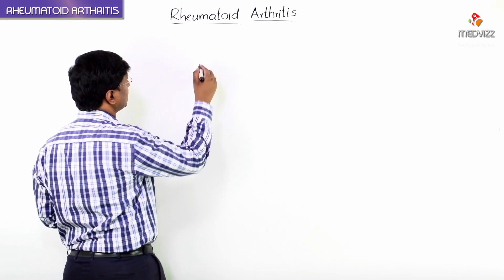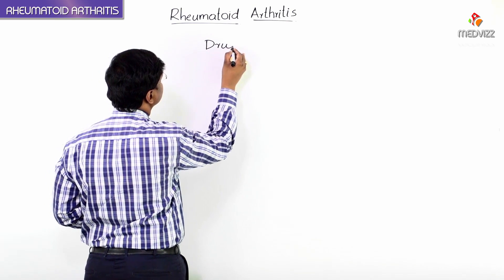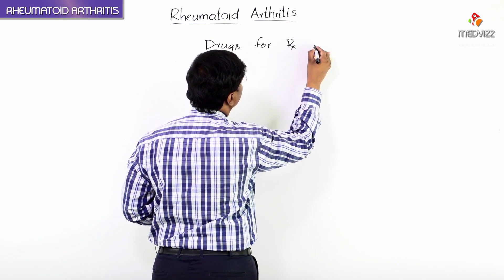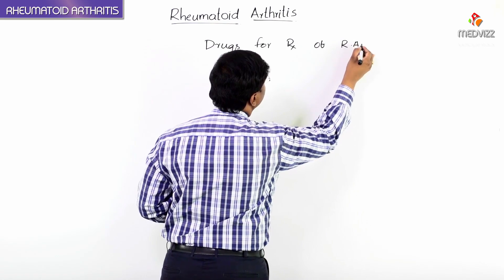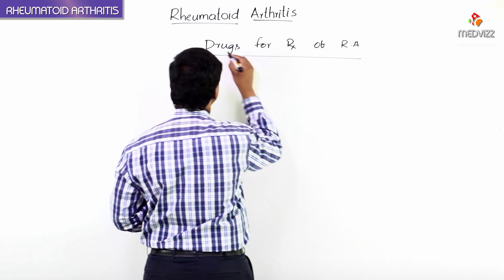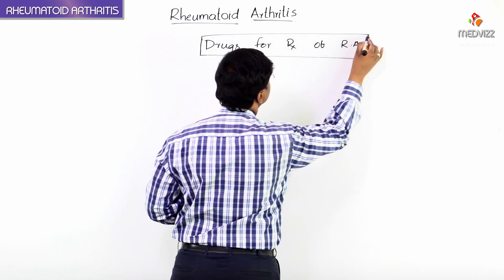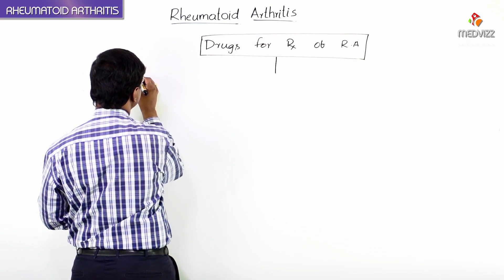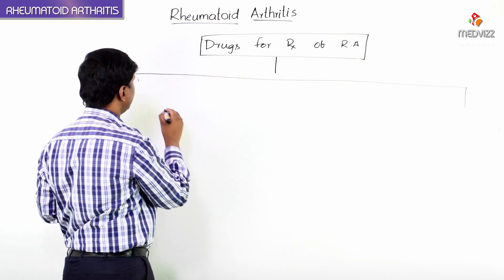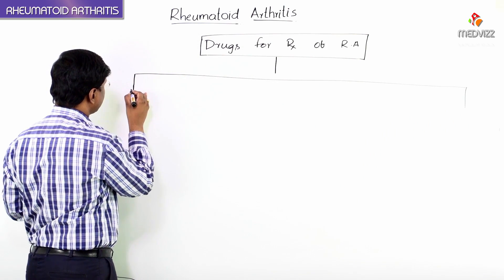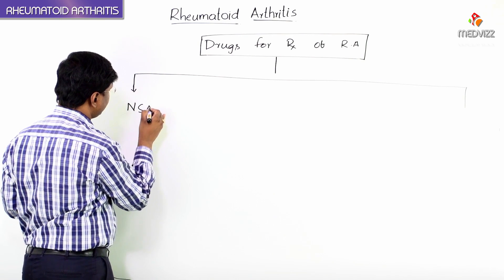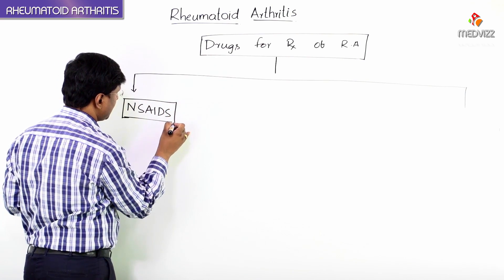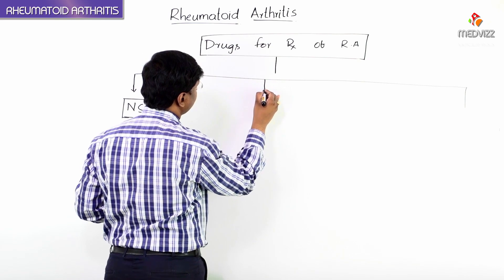Let me tell you what are the drugs for treatment of rheumatoid arthritis. We have three groups of drugs. First, in the acute phase to reduce the pain, we have NSAIDs — that is nonsteroidal anti-inflammatory drugs — and then we have corticosteroids.